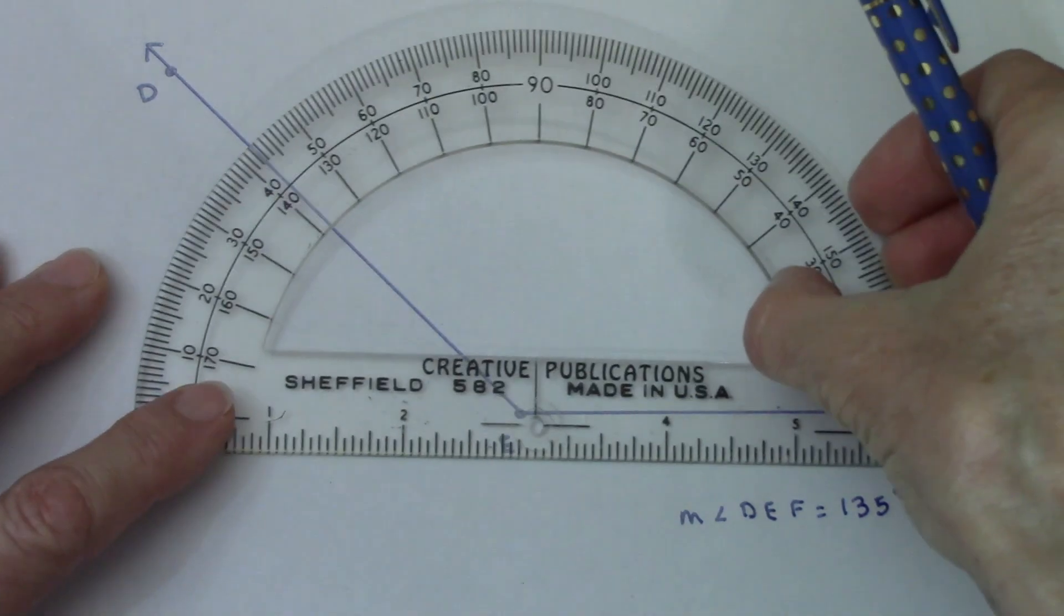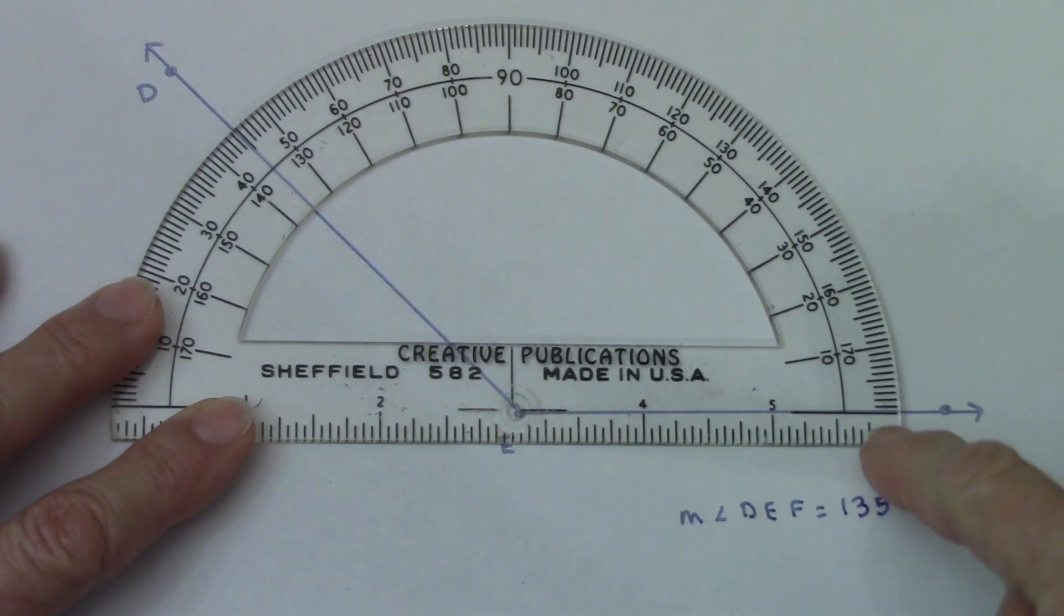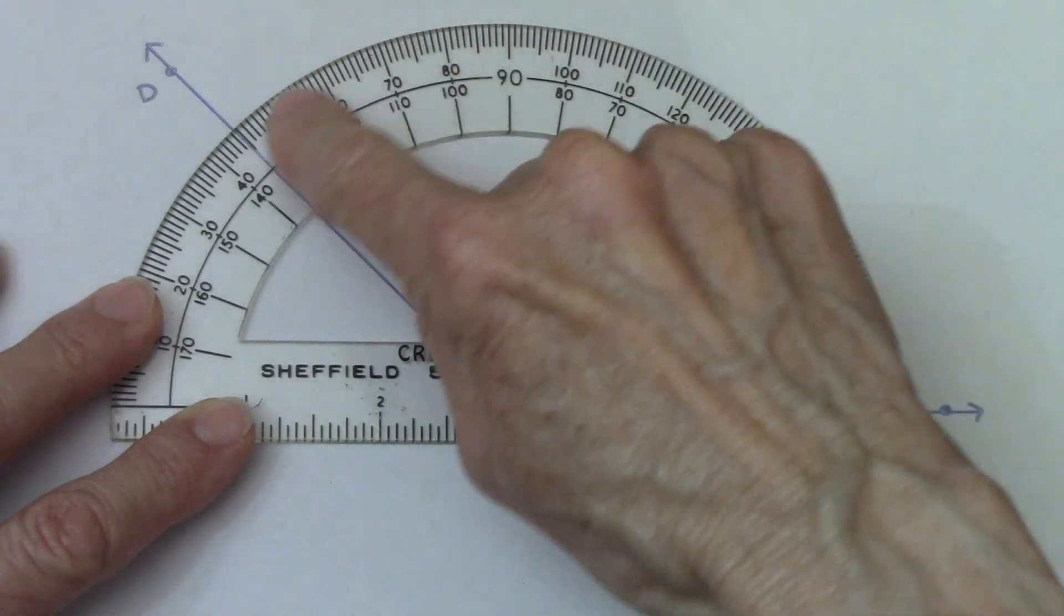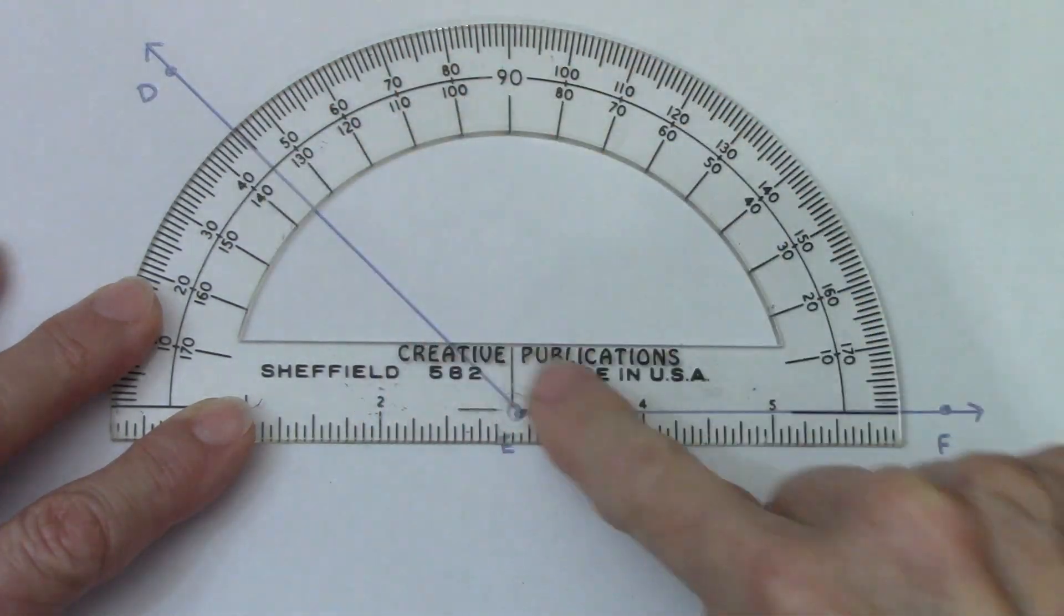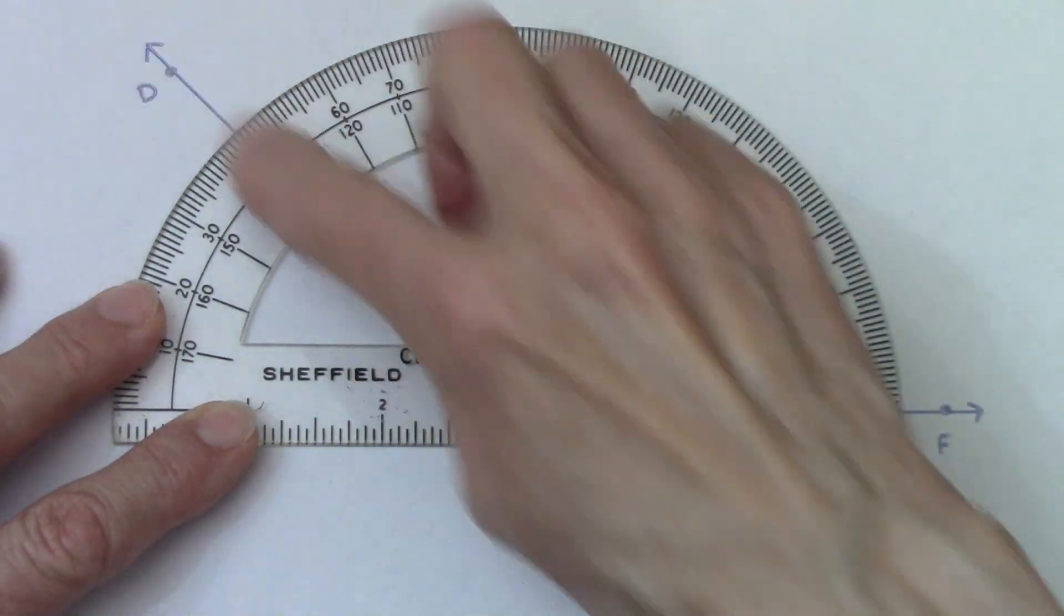When we measure an angle, it's important to realize that we're measuring how far it is from one ray or one side of the angle to the other ray. These are rays and they go on forever. So that doesn't tell us how big the angle is.